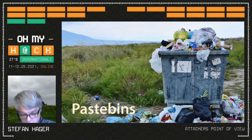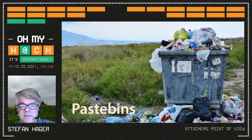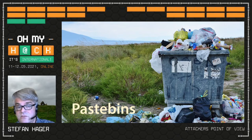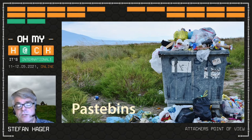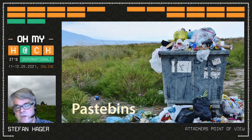Now we come to some more unconventional methods of gathering information. You've probably heard about pastebins. There are lots of them, and they basically work like the copy-and-paste clipboard under Windows, only remote — you can copy some information, paste it into a pastebin, and anyone with the right link can read it from there. It's often used for code snippets or shorter text files, because it's quicker to use a pastebin and send the link than to send a text file.